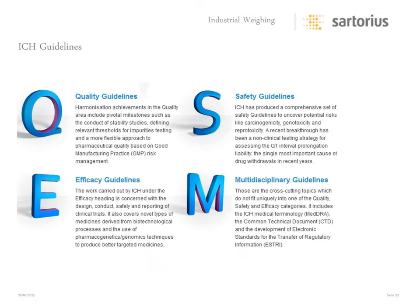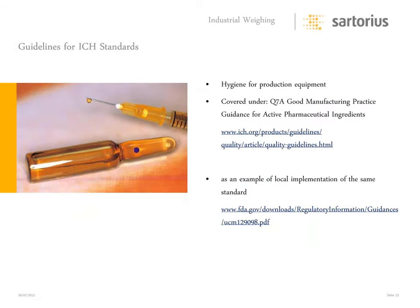There are quality guidelines, safety guidelines, efficacy guidelines, and multidisciplinary guidelines involved in the ICH. The guidelines for hygiene for production equipment are covered under the Q7A chapter of Good Manufacturing Practice. We keep coming back to GMP, which originated with the WHO.